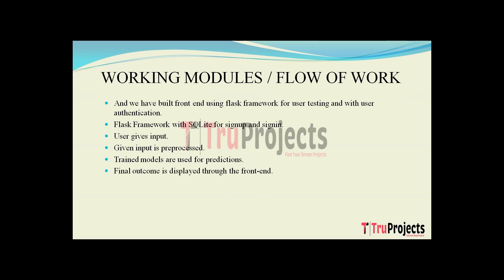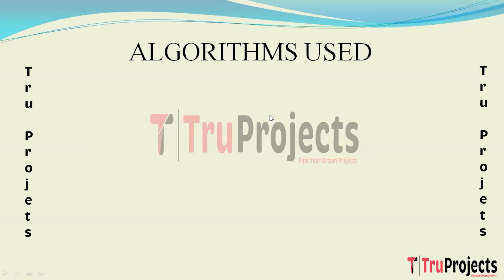The first algorithm built is AlexNet, a deep CNN architecture that played a pivotal role in the success of deep learning. It comprises multiple convolutional and fully connected layers using techniques like dropout and ReLU activation. AlexNet is employed as a baseline CNN architecture for malaria detection; its ability to capture complex patterns in images contributes to accurate classification.